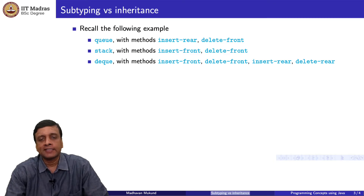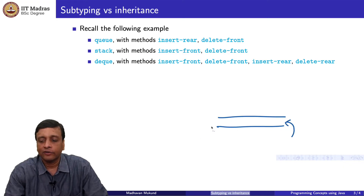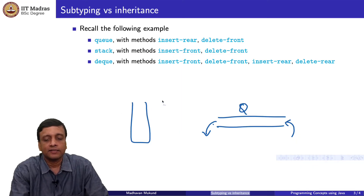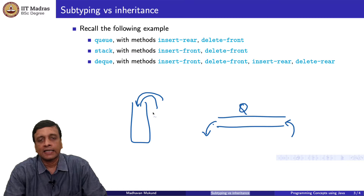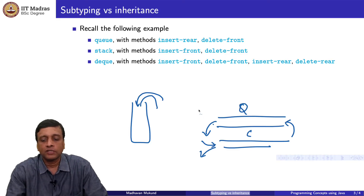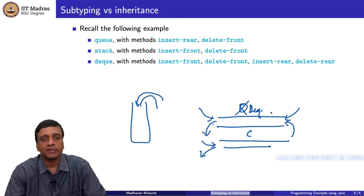To see that these two are different, let us look at the example we saw in the very first week. Suppose we have three data structures: a queue, a stack, and a double-ended queue or deque. A queue is a sequence where you enter at one end and leave at the other — you insert at the rear and delete from the front. A stack has a top where you push and pop; if implemented uniformly, both insert and delete come from the front. A deque allows insert and delete from both ends.